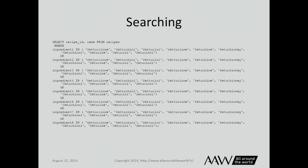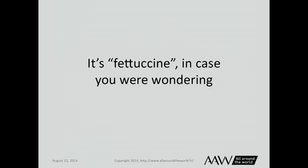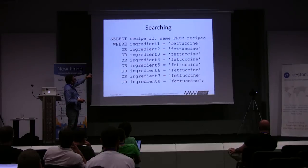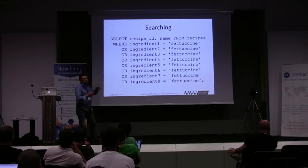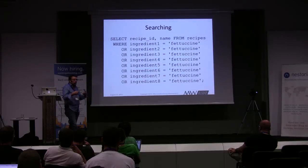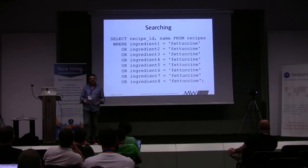You want to avoid having this data duplicated in your database. If you always spelled it correctly, you'd write SQL like: SELECT recipe_id, name FROM recipes WHERE ingredient_1 = 'fettuccine' OR ingredient_2 = 'fettuccine' … and so on. There's a lot of duplication there. The correct spelling, by the way, is fettuccine — and anyone who called out a number was wrong. So you want one and only one place for that ingredient name.